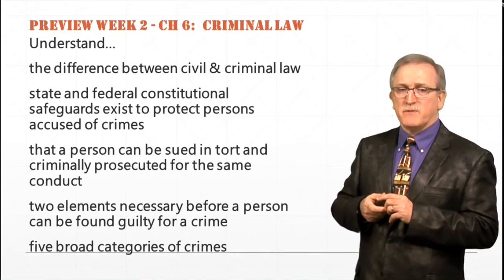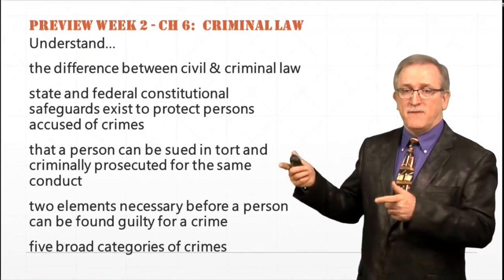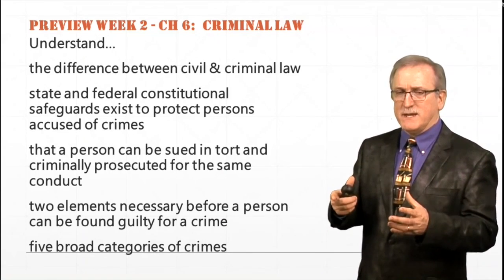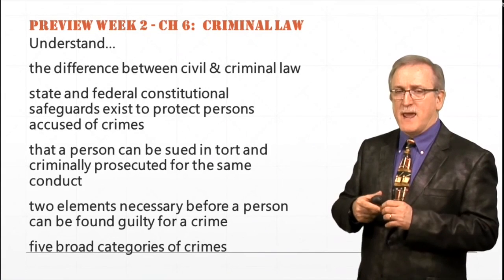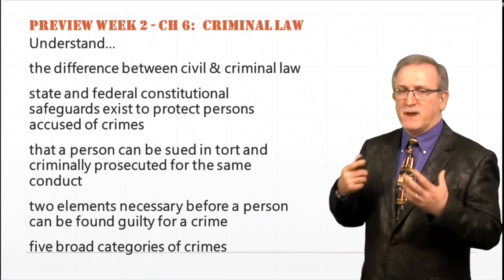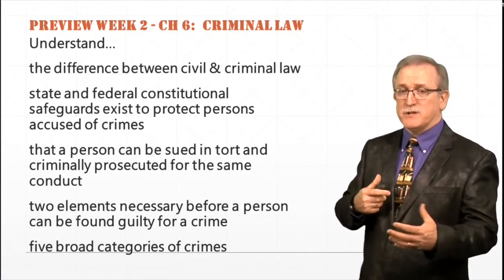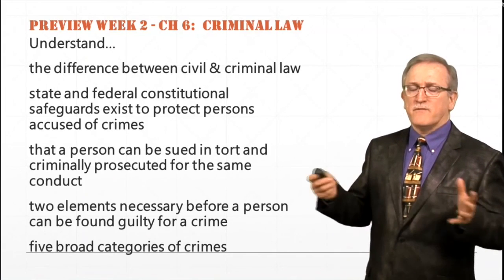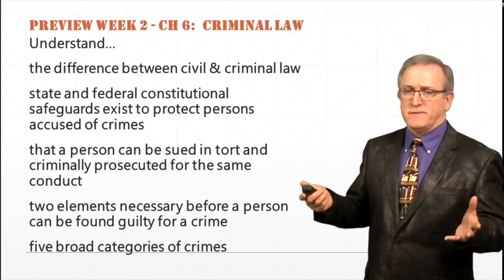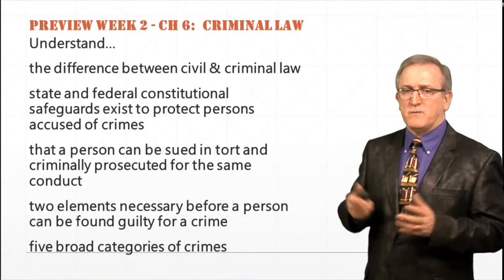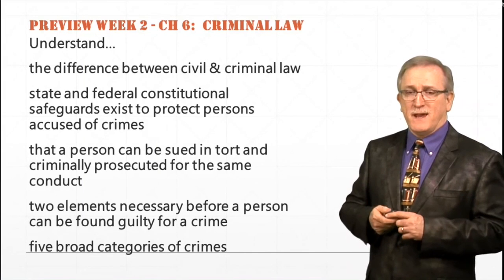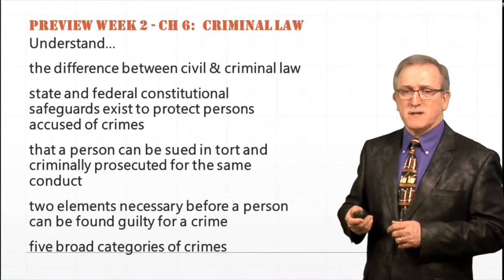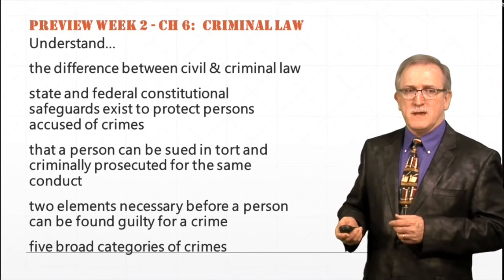Two elements are necessary before a person can be found guilty of a crime: intent and the act. Every criminal statute has some level of intent that the government must establish beyond a reasonable doubt, and an act — like premeditated murder requires premeditation and then the act. Categories of crimes include felony, misdemeanor, and gross misdemeanor. Note that a traffic violation is not a crime, so rights like the right to counsel don't apply to a speeding ticket.